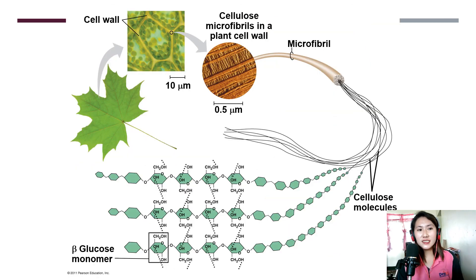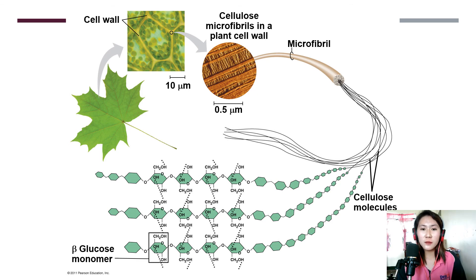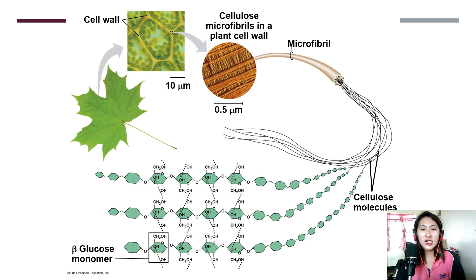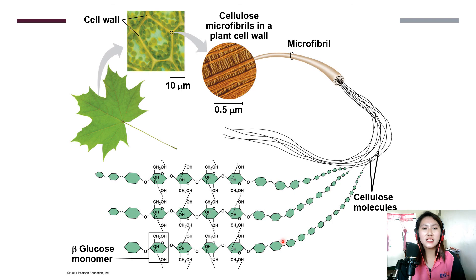Another example of polysaccharide is cellulose. Cellulose is the structural material in plants and can be found in the cell wall. It is a straight chain of glucose units, and it adds strength to the plant cell walls.